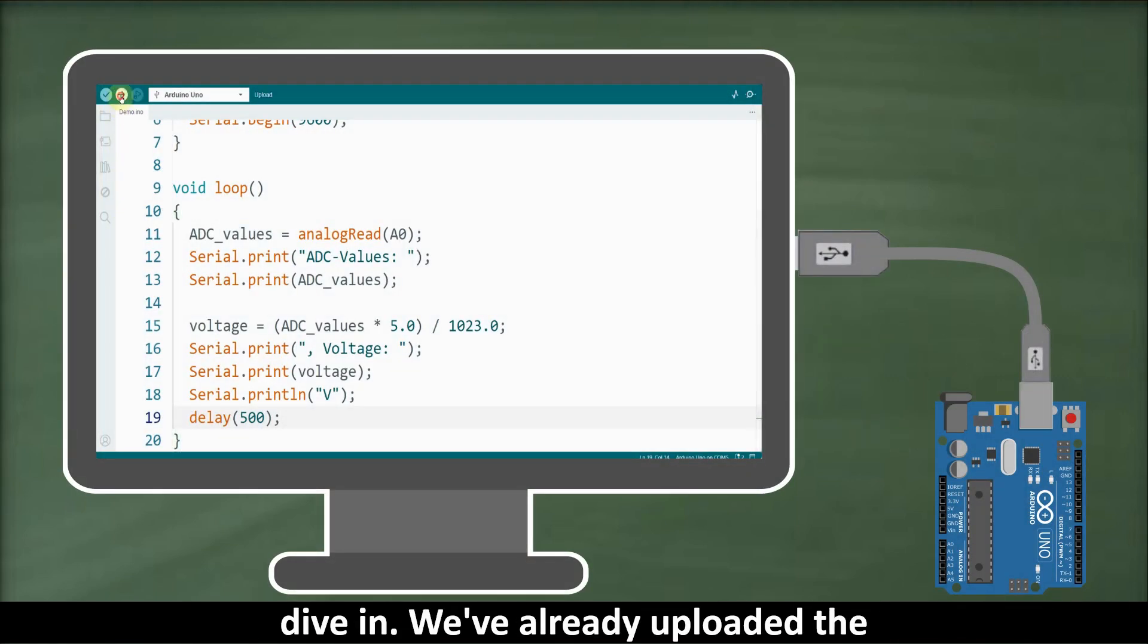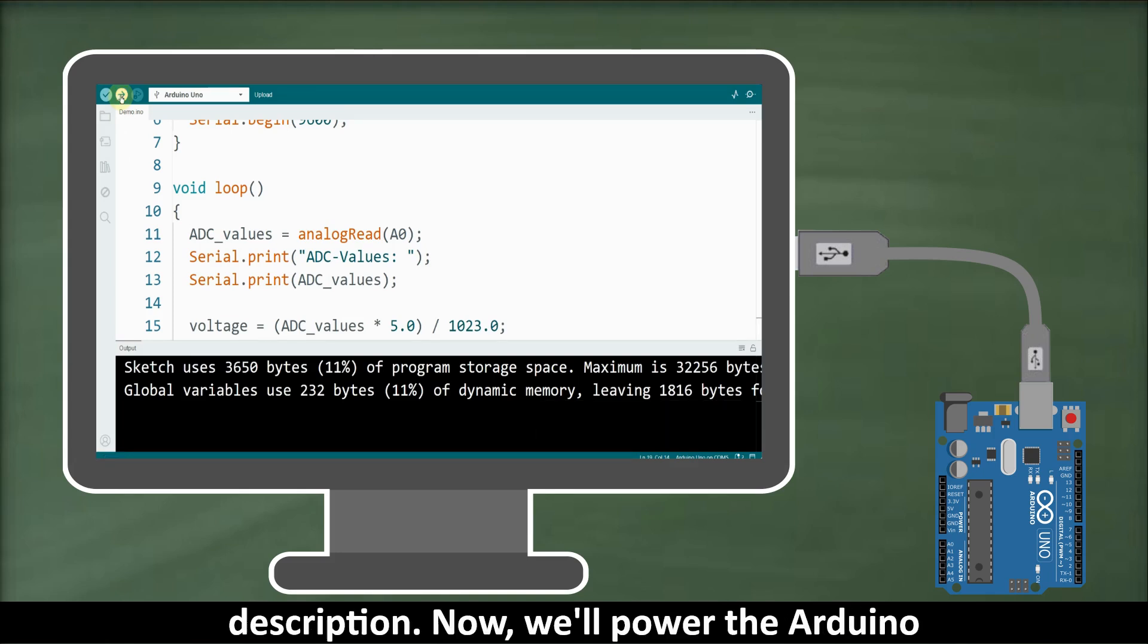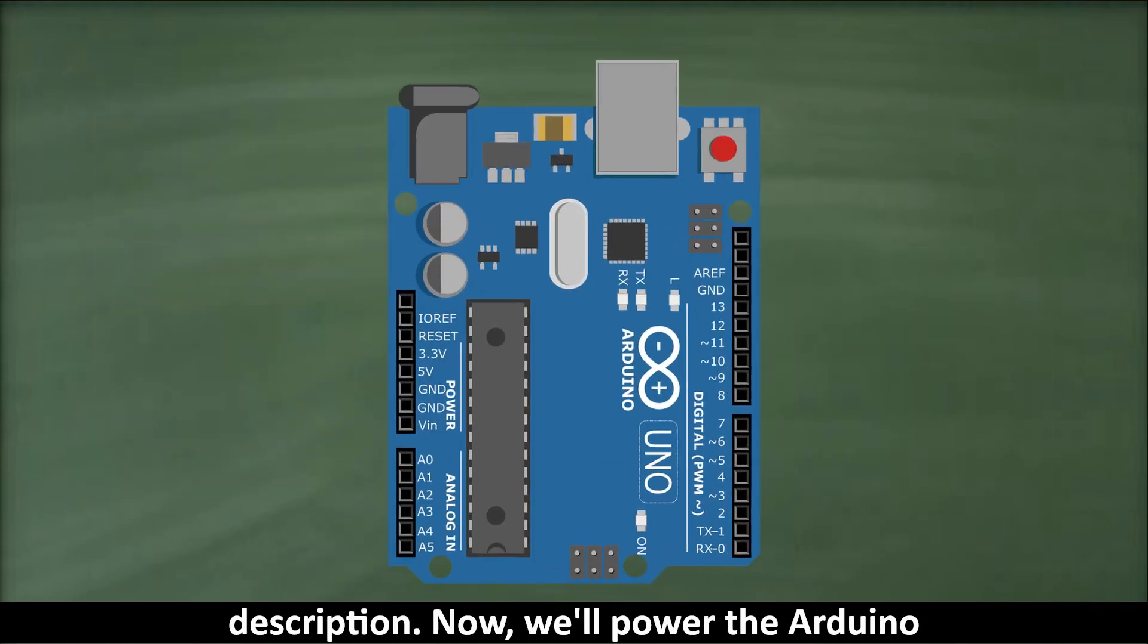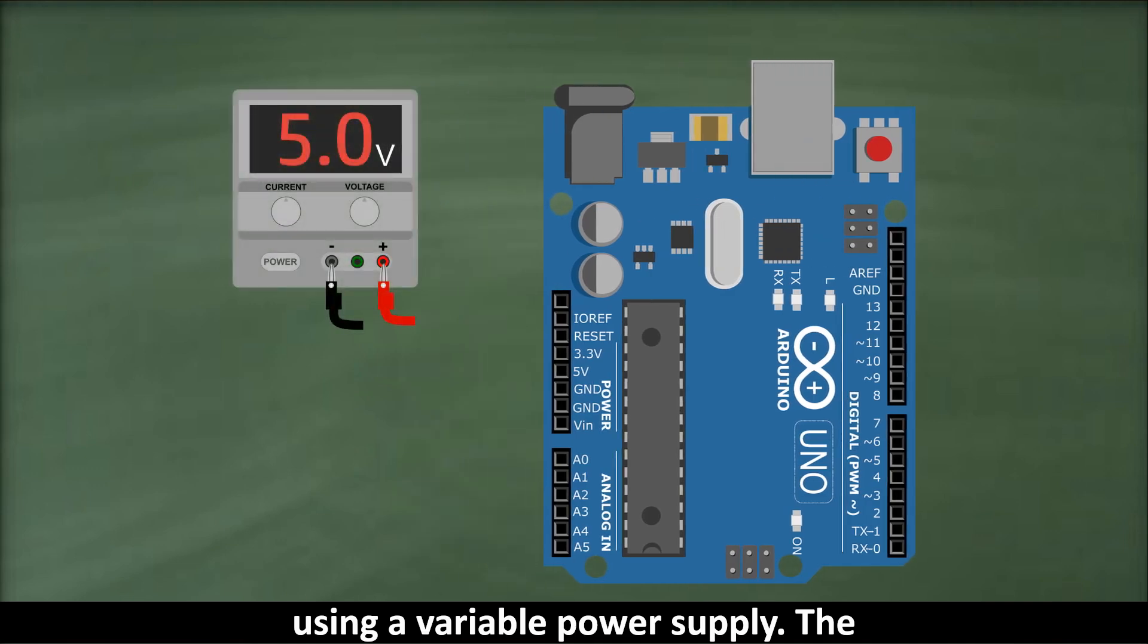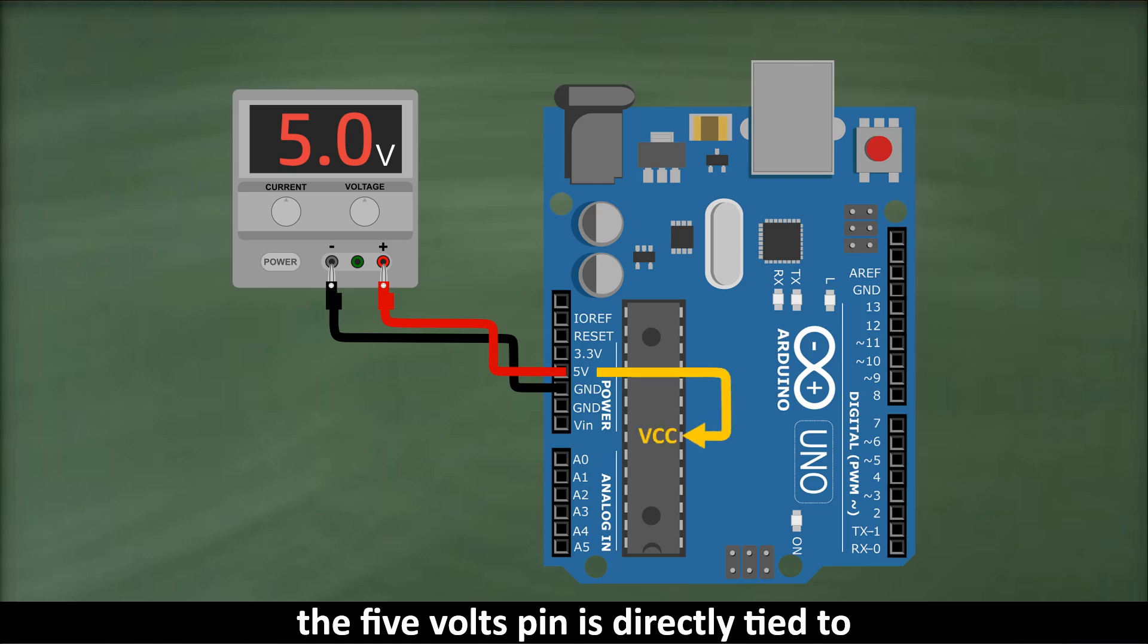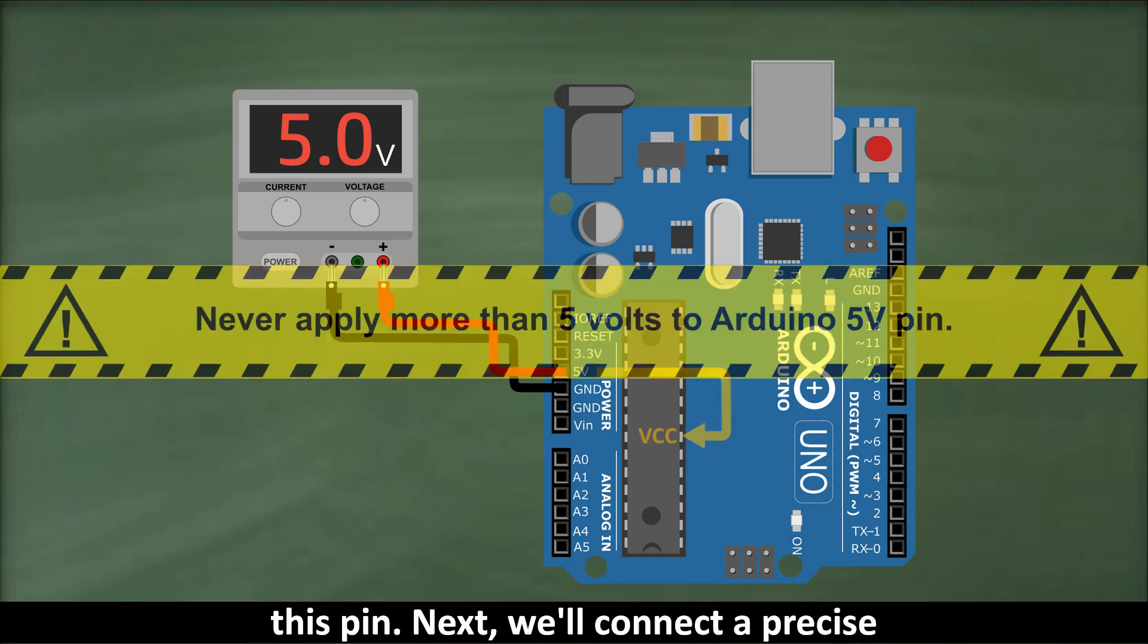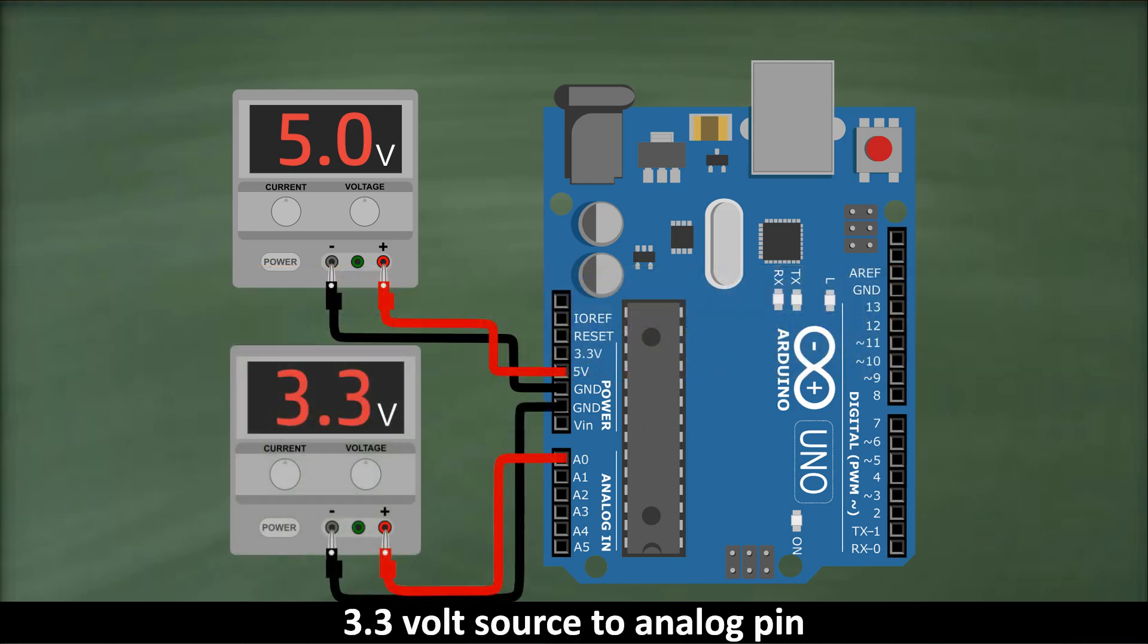We've already uploaded the sketch from our previous video to the Arduino, which you can find in the video description. Now we'll power the Arduino using a variable power supply. The positive lead goes to the 5 volts pin and the negative lead to the GND pin. An important point to remember here is that the 5 volts pin is directly tied to the VCC pin of the ATmega328 chip, so never supply more than 5 volts to this pin. Next we'll connect a precise 3.3 volt source to analog pin A0.